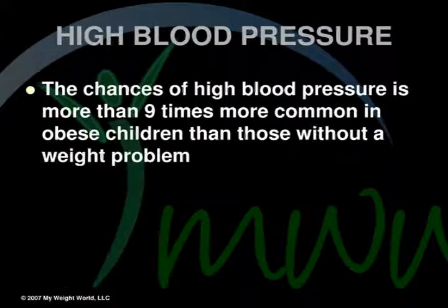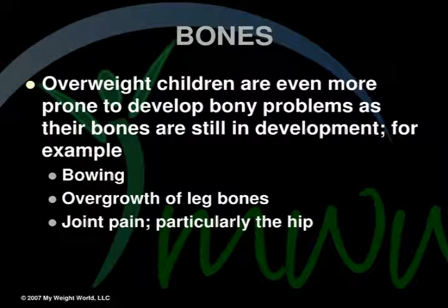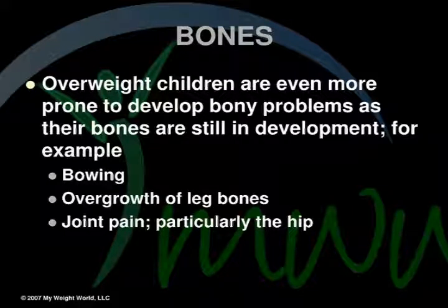The chance of high blood pressure is more than nine times more common in obese children than those without a weight problem. Overweight children are also more prone to develop bony problems, as their bones are still in development — for example, bowing, overgrowth of leg bones, and joint pain.